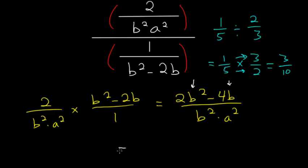So if we factor it out, we have b times 2b minus 4 divided by b squared times a squared. And now notice that we have a b squared here and a b.